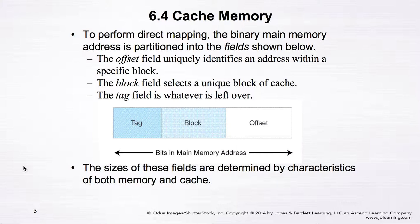We can also perform direct mapping using the binary main memory address, which is partitioned into different fields. The first field is called the offset field, which uniquely identifies an address within a specific block. The second field is called the block field, which selects a unique block of the cache. The last field is called the tag field, which is whatever is left after the first two fields. Here is the graphical representation: we have the tag, the block, and the offset — the whole thing corresponds to bits in the memory address. We'll show a true example in the next video of how this works.